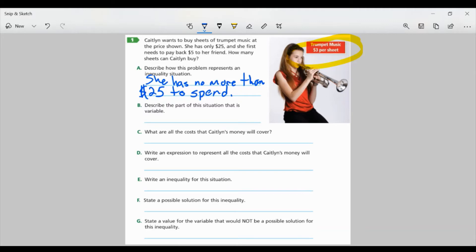Part B. Describe the part of this situation that is a variable. Well, the variable is going to be the trumpet music, because we don't know how many she's able to get. So the actual number of sheets of music. That is what my variable is going to represent.